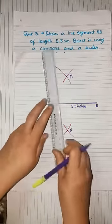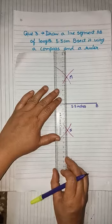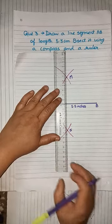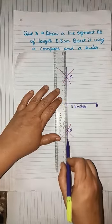With the help of ruler also, again we have to draw one line which passes through both the points M and N and intersect line segment AB at one point.